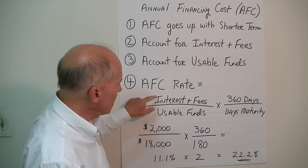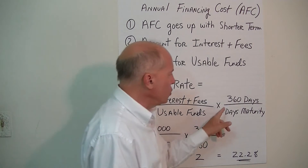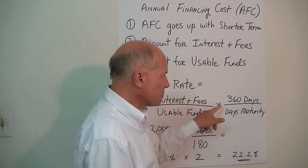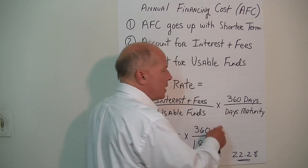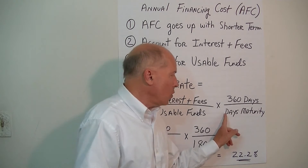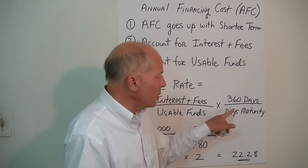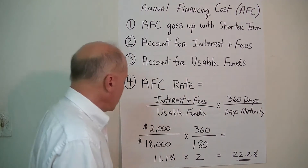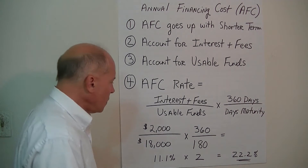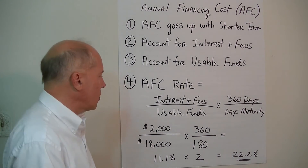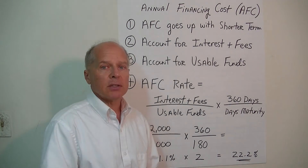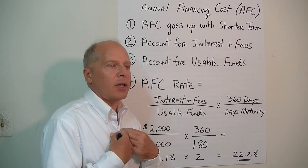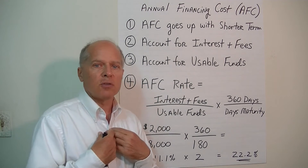We take those total cost amounts, divide by the usable funds, and we use the banker's year of 360 days divided by the days of maturity within the particular loan. So if the loan is a 30-day loan, that's 30; if it's 3 months, then it's 90 days. In our example, we're going to take out a $20,000 loan with the bank for 6 months. So what is the actual annual financing cost for this $20,000, 6-month loan?